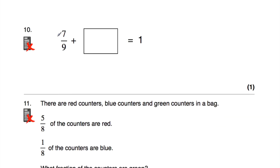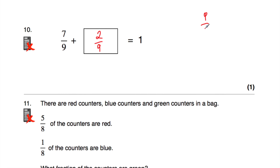Let's have a look at question number ten. Question ten says: seven ninths plus something equals one. We're dealing with ninths and we've got seven ninths — we want to know what to add to get a whole. If we imagine a pizza cut into ninths and we've got seven pieces, we'd need another two to make a whole. So seven ninths plus two ninths equals nine ninths, which is a whole. The missing fraction is two ninths.